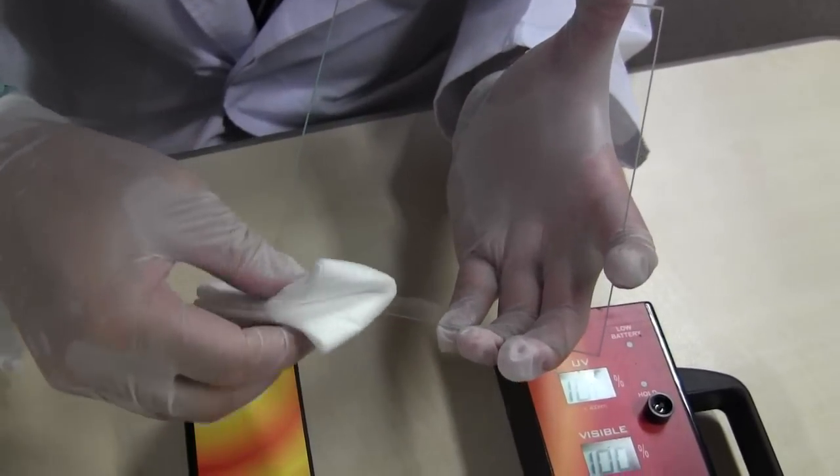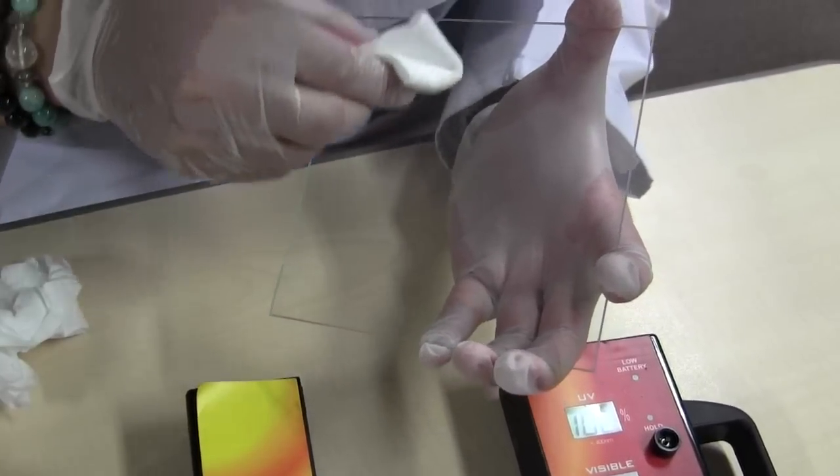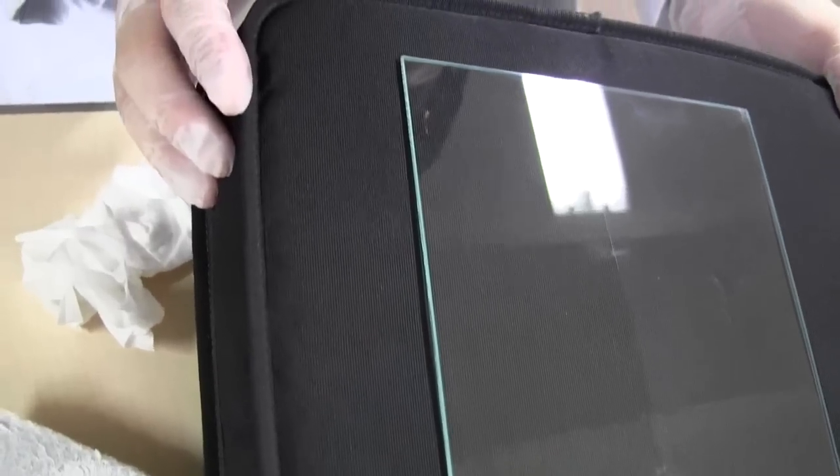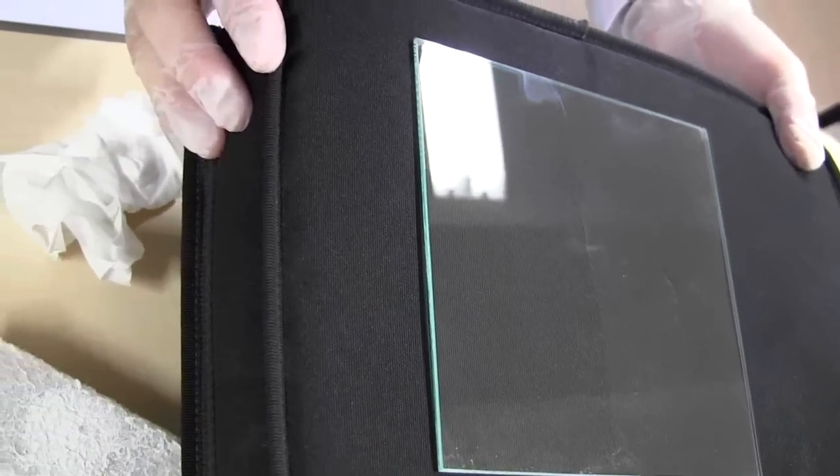Half the surface of the plate is coated to show the difference. The coated part is slightly darker than the non-coated part.